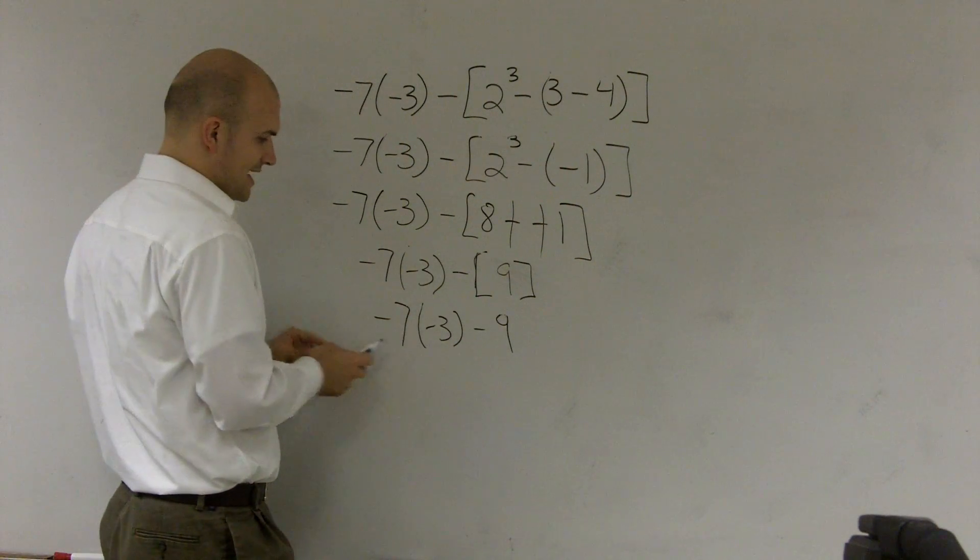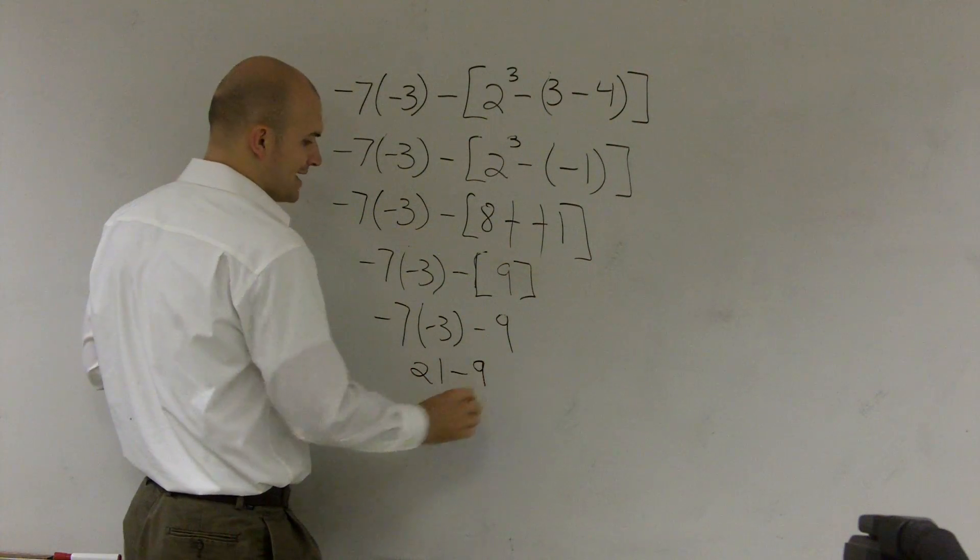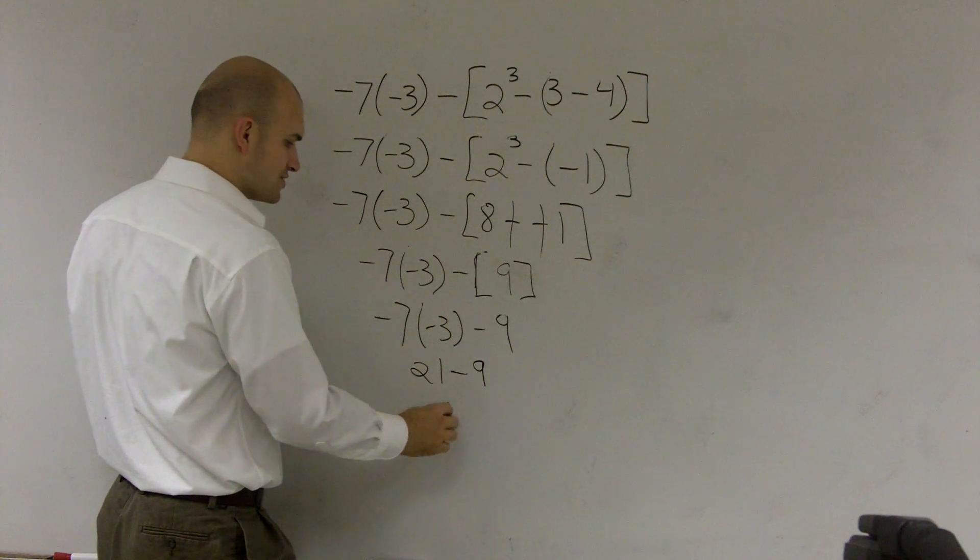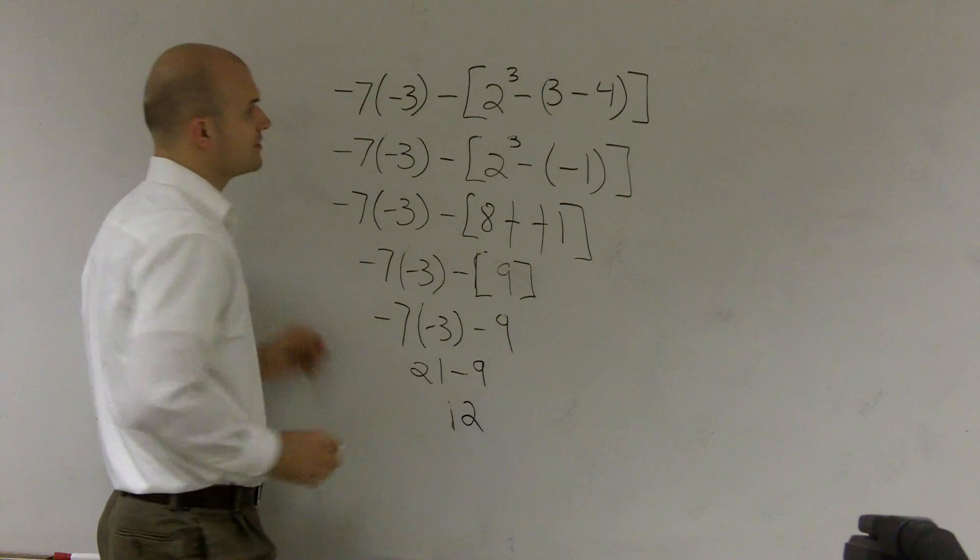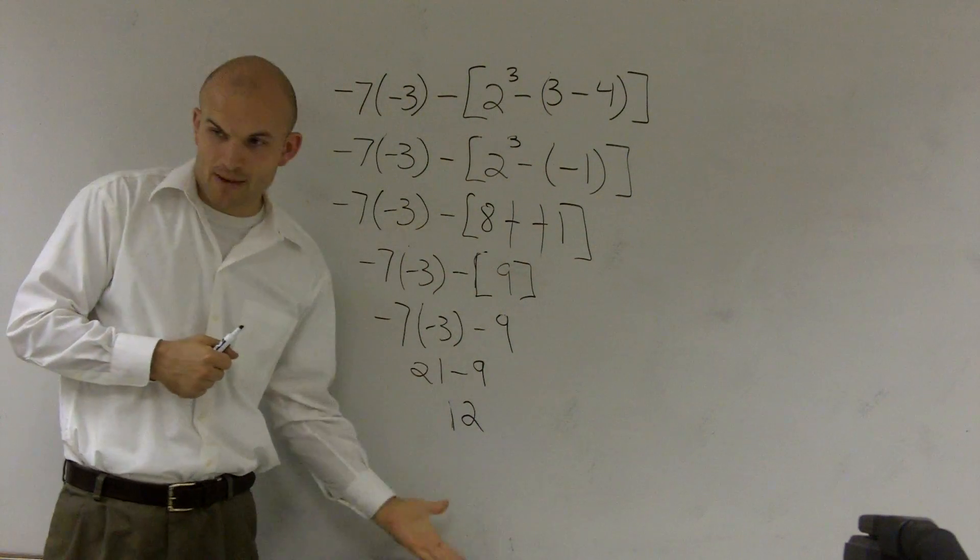So negative 7 times a negative 3 is going to give me a positive 21 minus 9. Then I can subtract, which is going to give me 12. So that's how I use order of operation for all of PEMDAS.